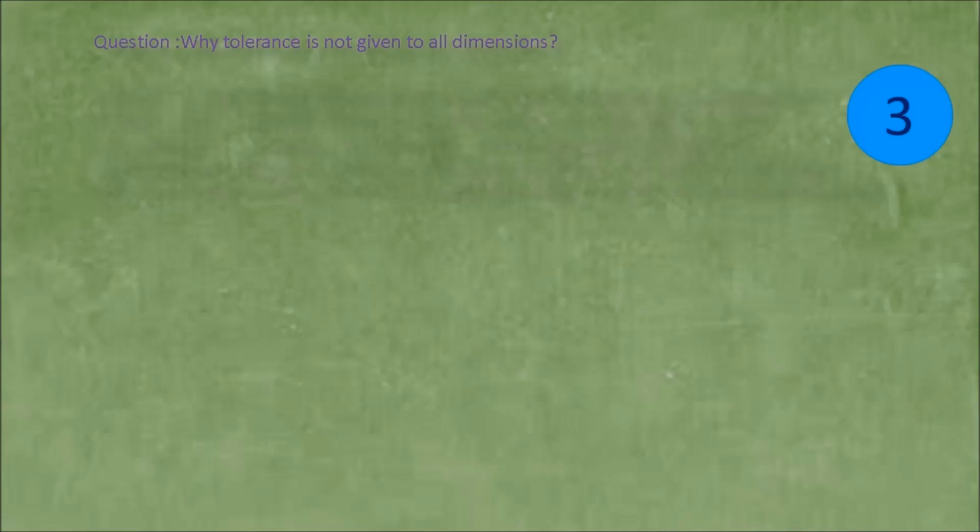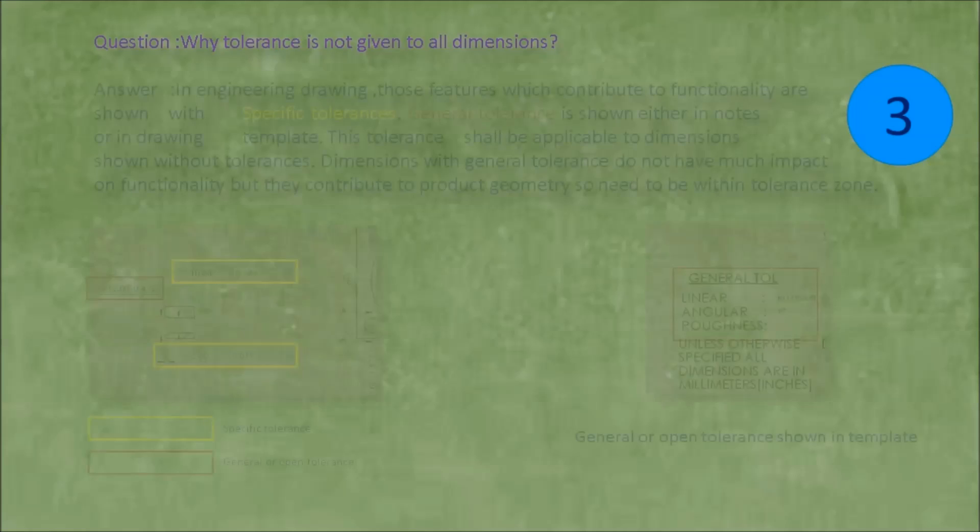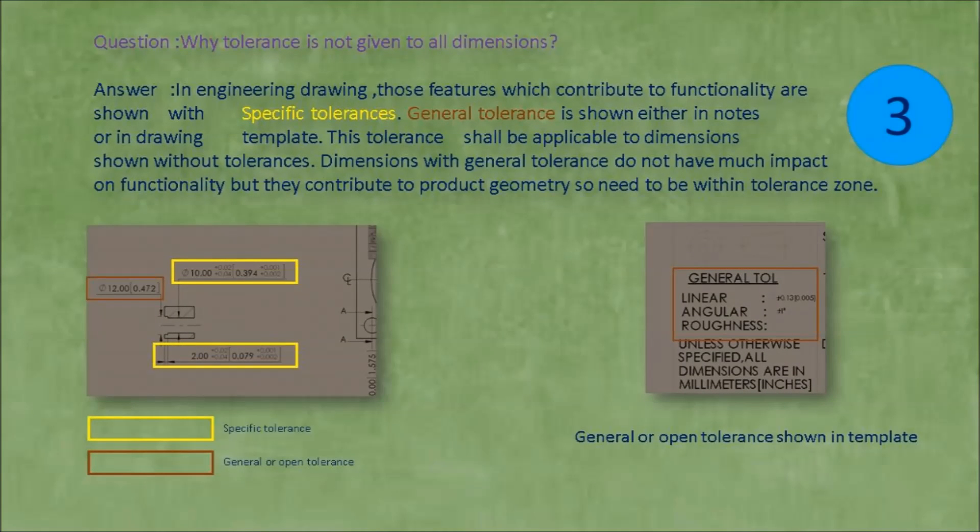Question: Why tolerance is not given to all dimensions? Answer: In engineering drawing, those features which contribute to functionality are shown with specific tolerances. General tolerance is shown either in notes or in drawing template. This tolerance shall be applicable to dimensions shown without tolerances.